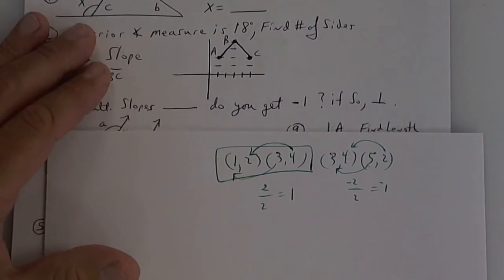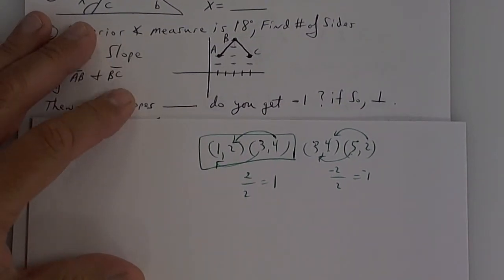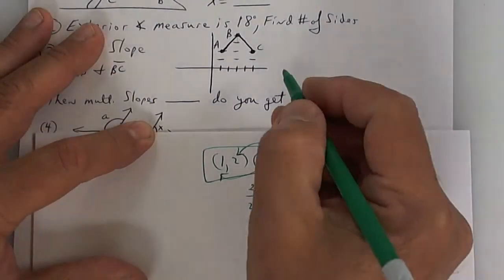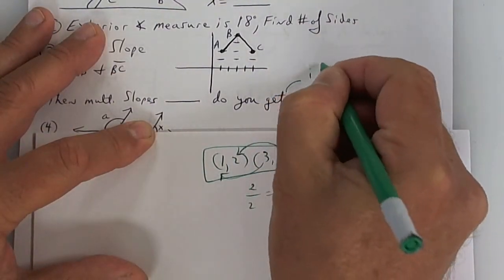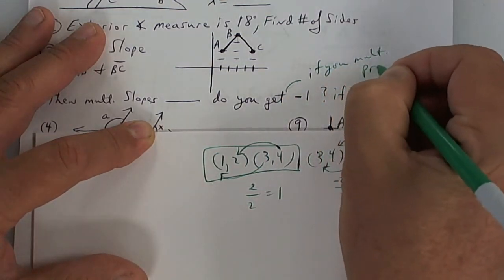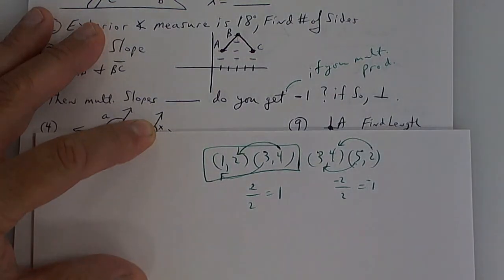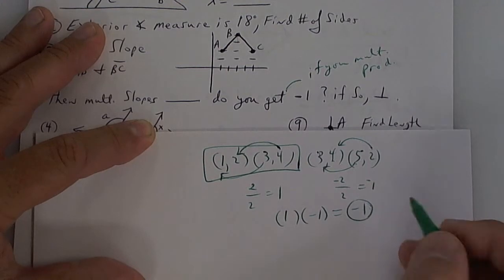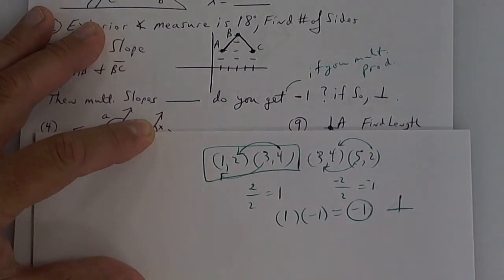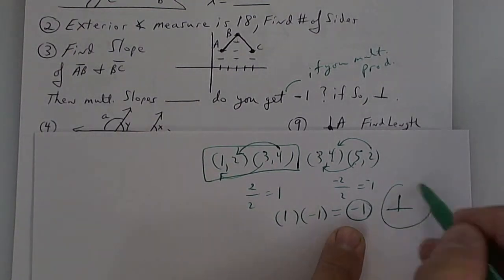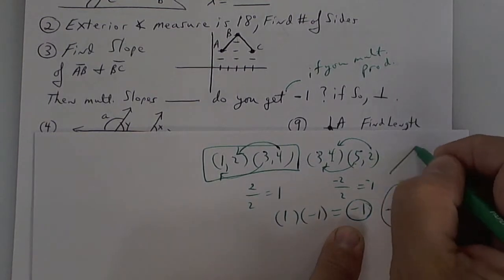Now I think I said, what do you get if you multiply? That's called product, by the way. If you take 1 times negative 1, you get negative 1. That means the lines are perpendicular. That's what I'm trying to get across. Since the slopes, when you multiply the slopes together, you get negative 1, that means the lines are perpendicular. They come in at exactly 90 degrees.